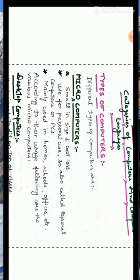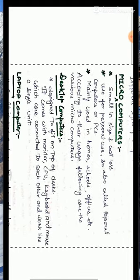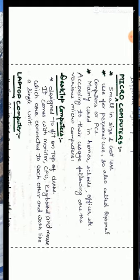We can also categorize microcomputers according to their uses. There are various microcomputers that are given different names according to their uses. The first microcomputer is desktop computers. These computers are designed to fit comfortably on the top of desks, therefore they are known as desktop computers.